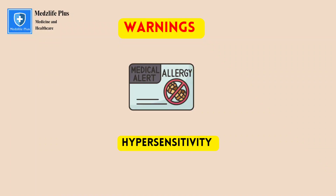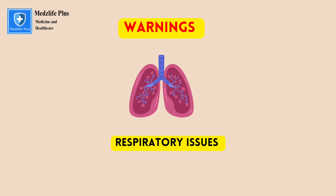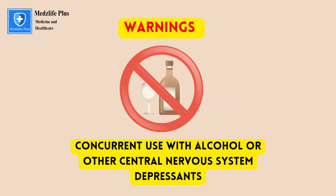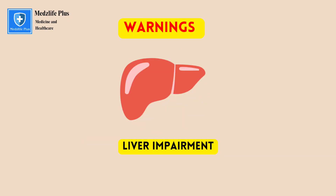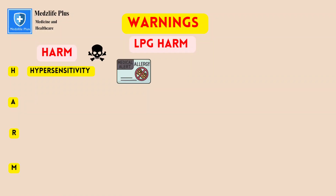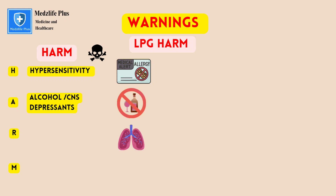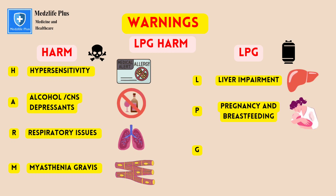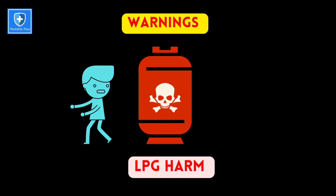Benzodiazepines are contraindicated in cases of hypersensitivity, respiratory issues, myasthenia gravis, glaucoma, concurrent use with alcohol or other CNS depressants, pregnancy and breastfeeding, and liver impairment. The mnemonic 'LPG harms' helps: H for hypersensitivity, A for alcohol or CNS depressant use, R for respiratory issues, M for myasthenia gravis, and LPG for liver impairment, pregnancy/breastfeeding, and glaucoma.